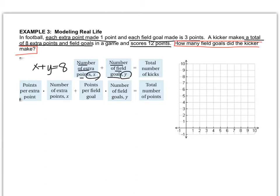Now I look at the other setup. The points per extra point, which is 1 for an extra point, times x. Then the points per field goal is 3. Each field goal is worth 3 points. So plus 3 times y, the number of field goals I don't know, equals the total number of points, which is 12. So x plus 3y equals 12.